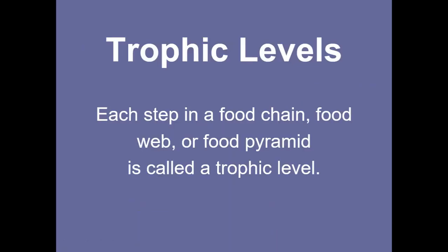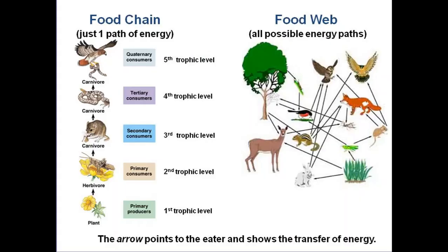In ecosystems we have trophic levels. Each step in a food chain, food web, or food pyramid is called a trophic level. Here we have a food chain, meaning it just goes one after the other in a straight line. This isn't as realistic as a food web, but it's easy to understand.